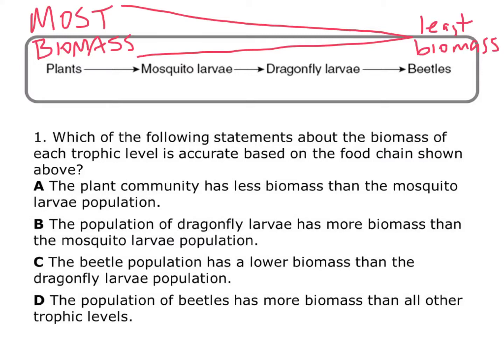Answer A says the plant community has less biomass than the mosquito larvae community. Well, the plant community are producers and they have the most, so they don't have less biomass than any other population — that cannot be correct.